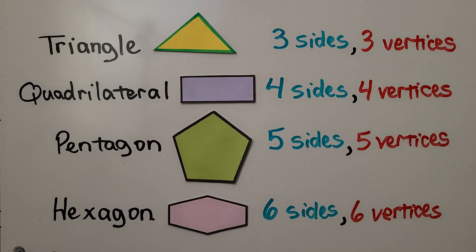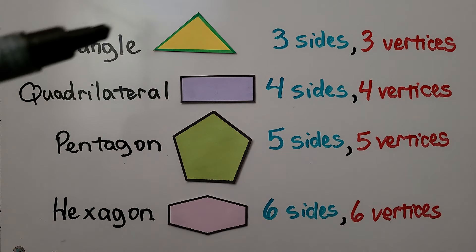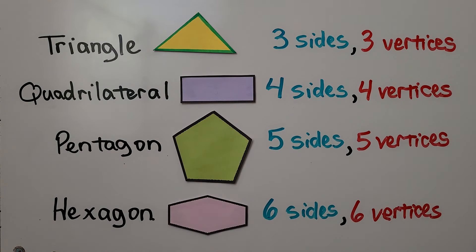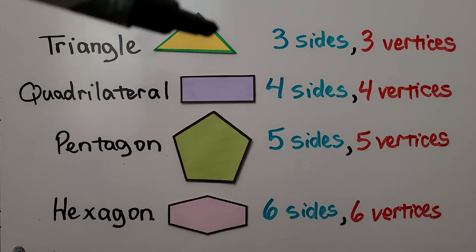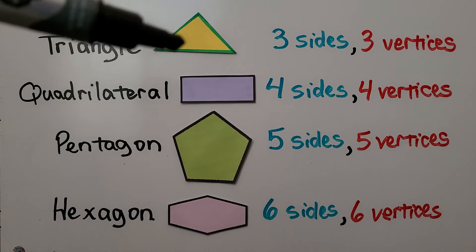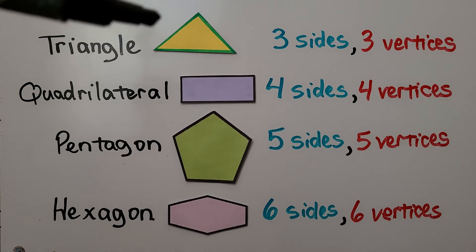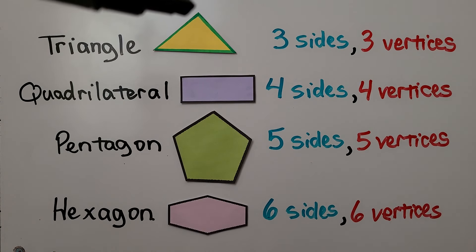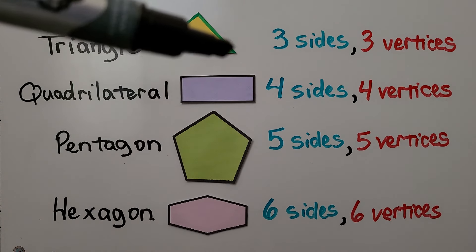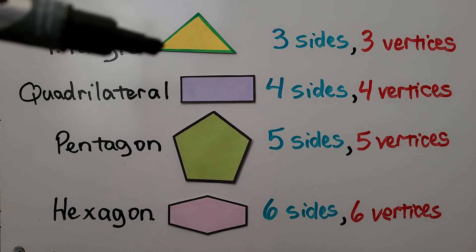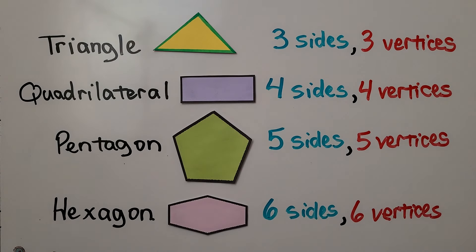So let's review that again. This is a triangle. It's got three sides and three vertices — one, two, three sides and one, two, three vertices.